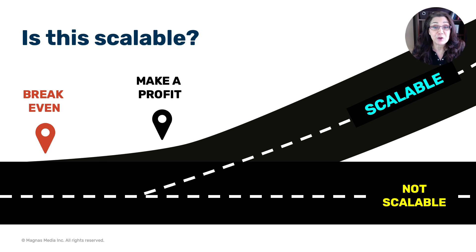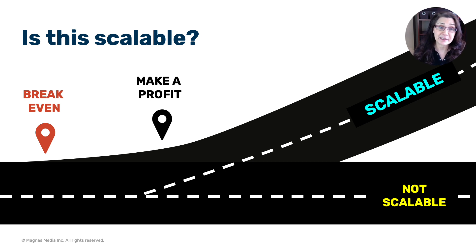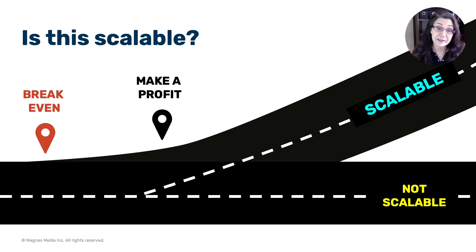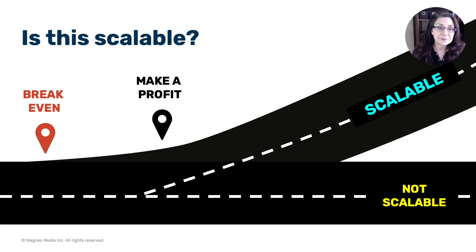From an investment perspective, you need to show if your business is scalable. First, you need to know when you can break even — at what point your income can cover your expenses. Next is profit: at what point can you make a profit? Profit is the amount of income that remains after you've paid all your expenses, debts, and operating costs. Many business owners forget to include their salary — your salary is not a profit. After you've paid yourself, paid all the expenses, debts, and operating costs, how much money is left behind?